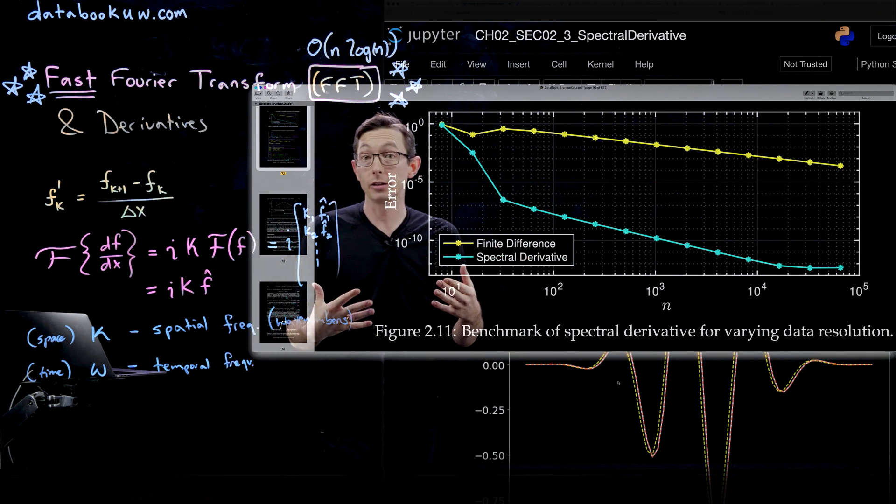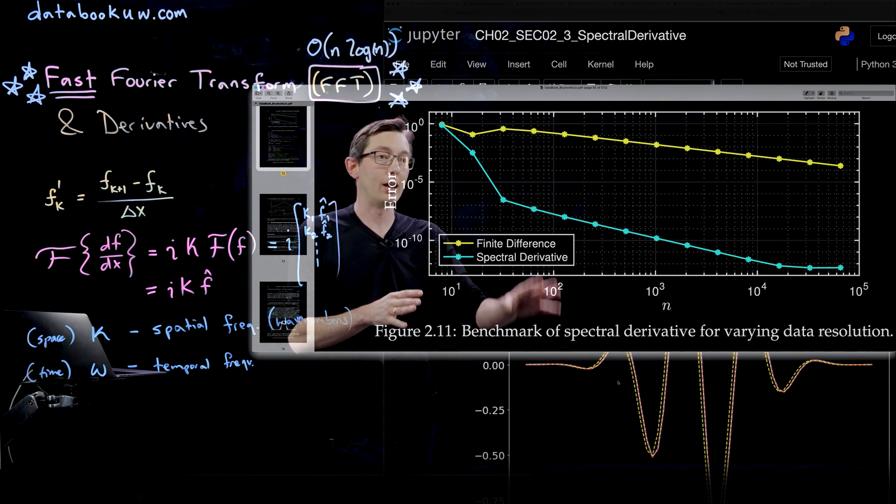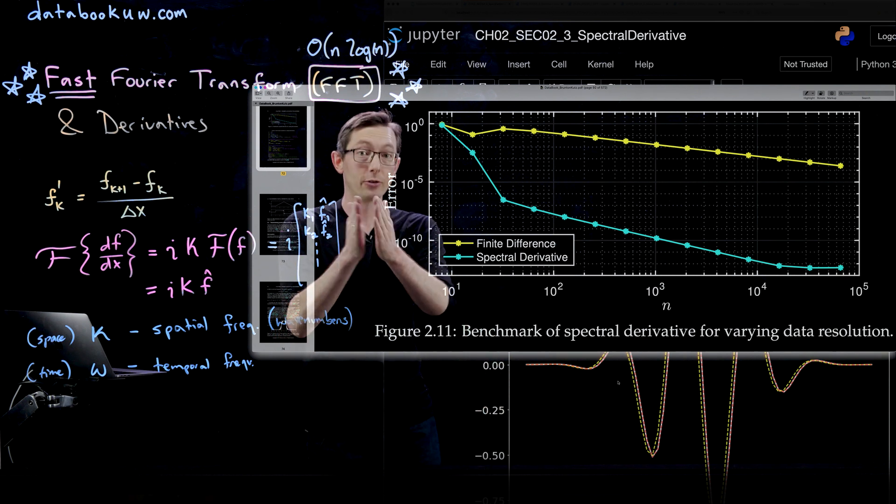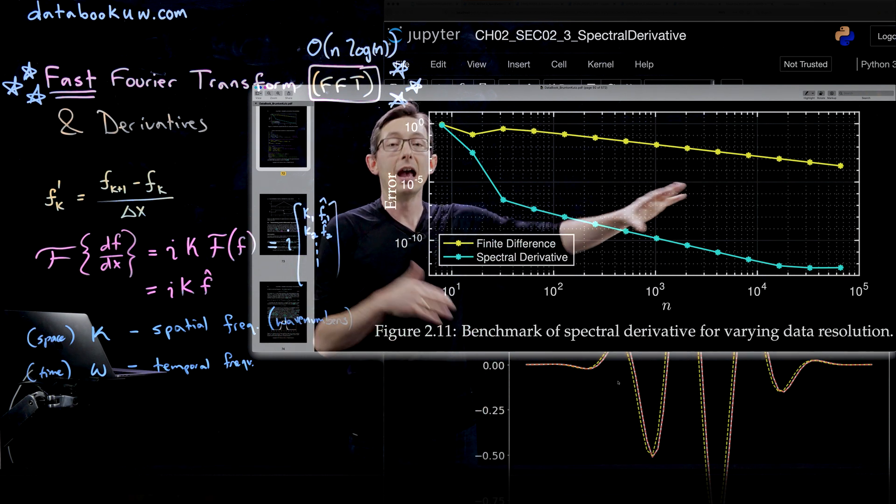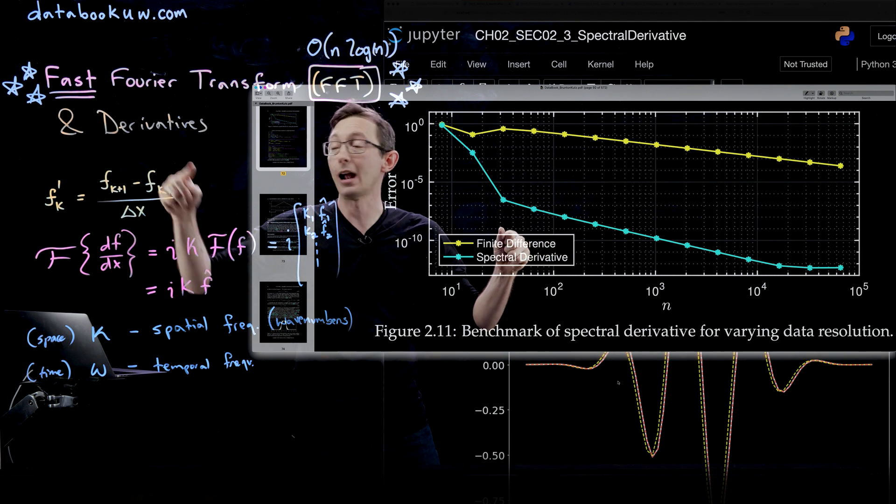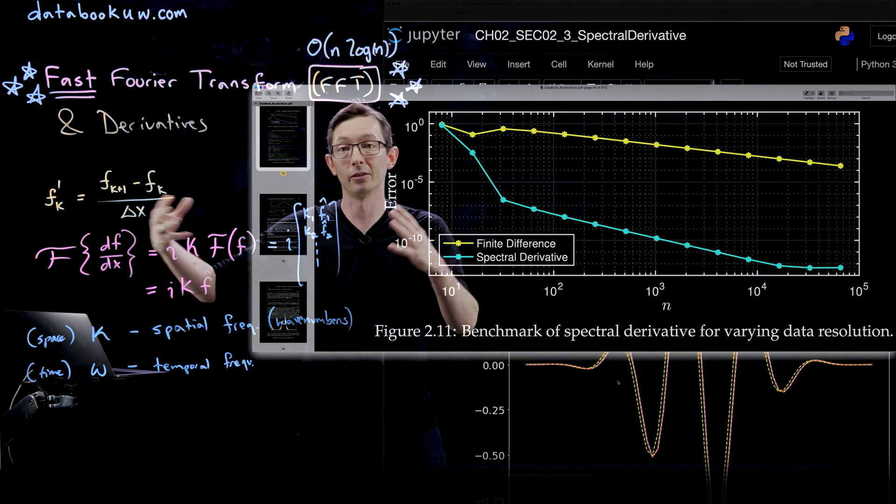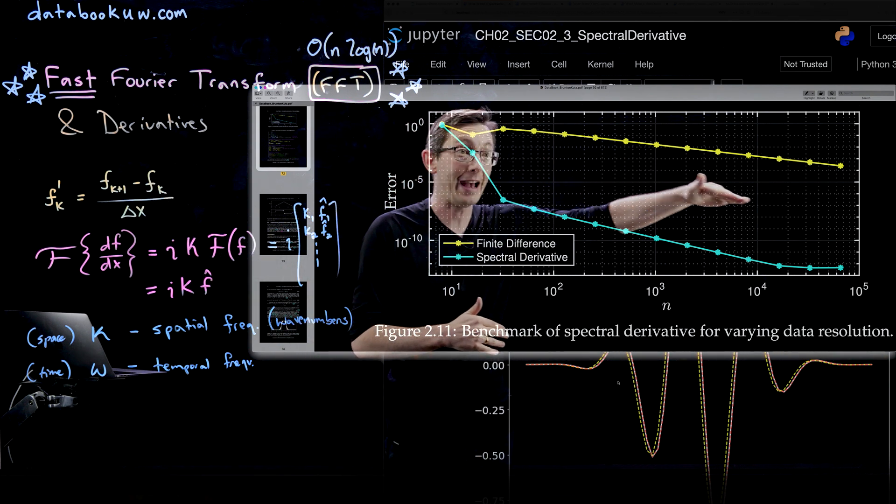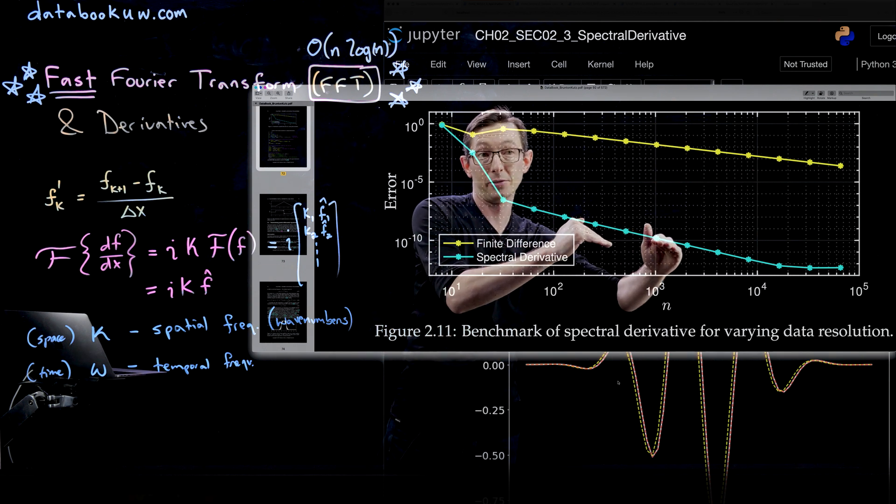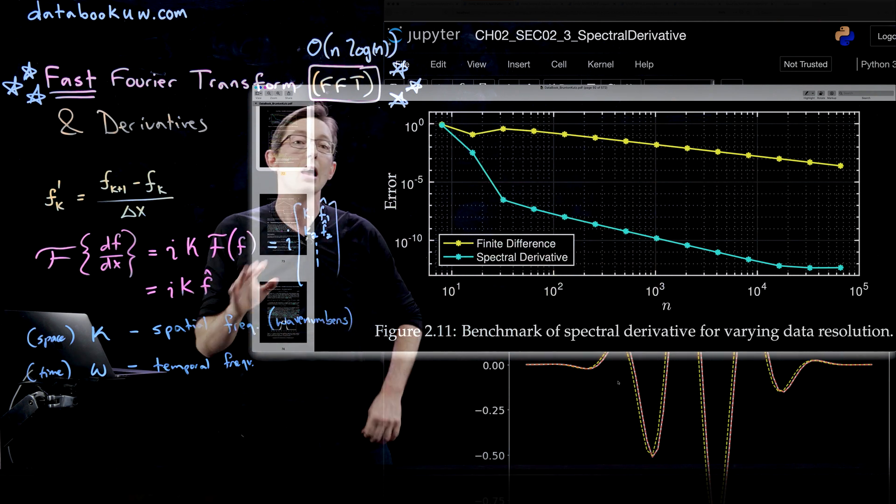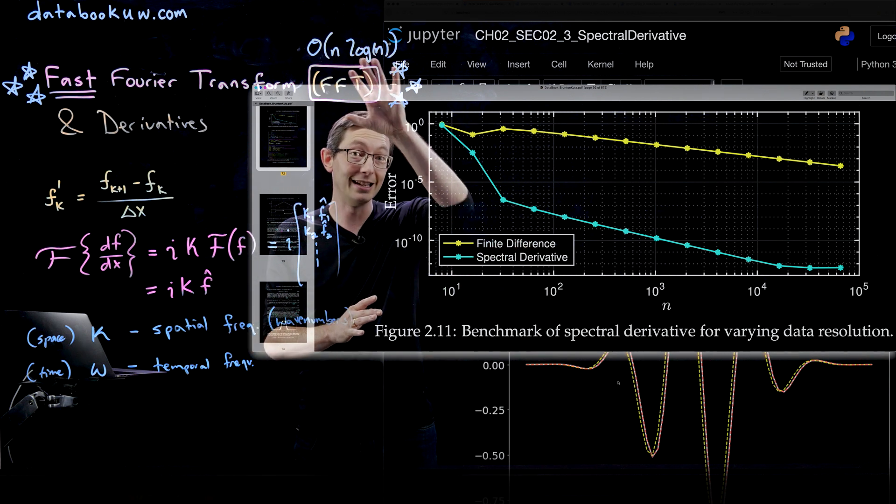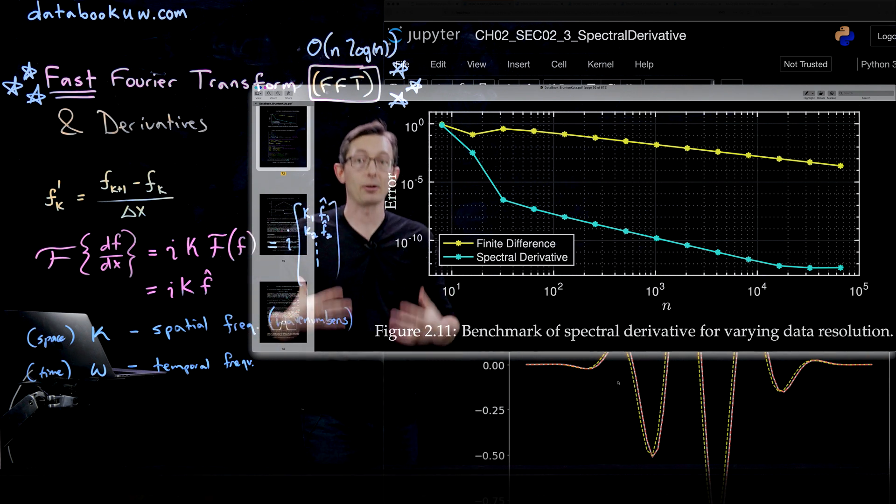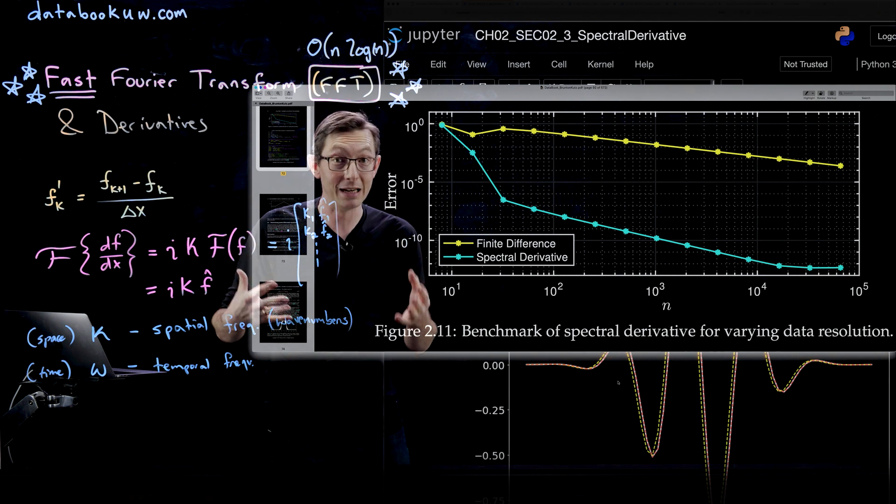I would encourage you to write up a code to do this yourself. All it would require is taking this code I just showed you and wrapping a for loop around it for increasing n and making these plots. You could try higher order accurate, maybe a central difference scheme or a second order or fourth order finite difference scheme. You could see that those will converge faster, but they won't converge as rapidly as the spectral derivative. The spectral derivative is really a much better way of computing the derivatives of clean data.